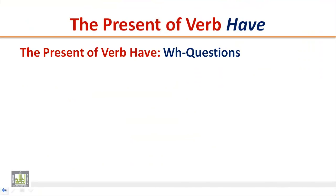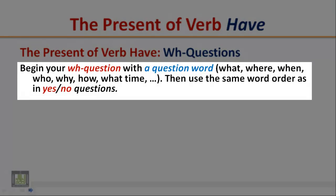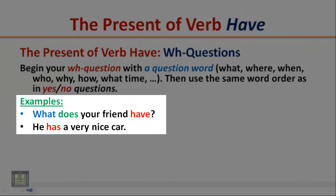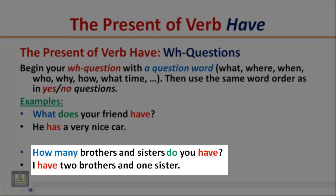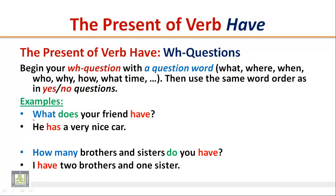The present of verb 'have' — WH questions. Begin your WH question with a question word like what, where, when, who, why, how, what time, etc. Then use the same word order as in yes/no questions. Examples: What does your friend have? He has a very nice car.